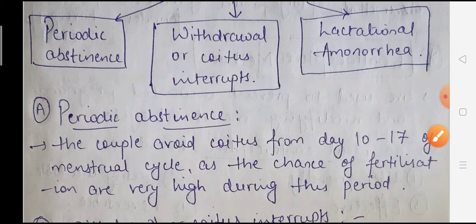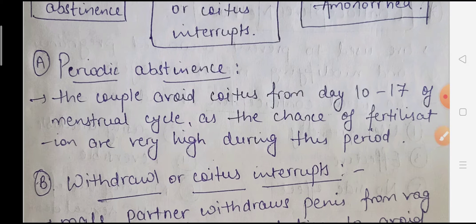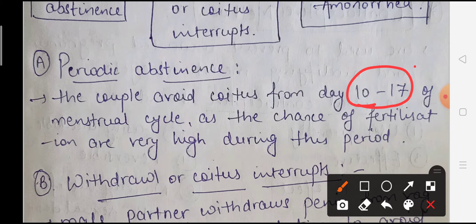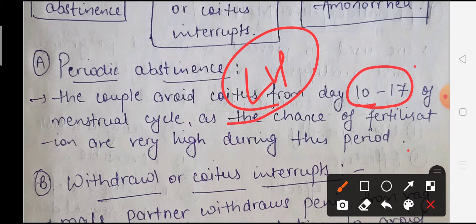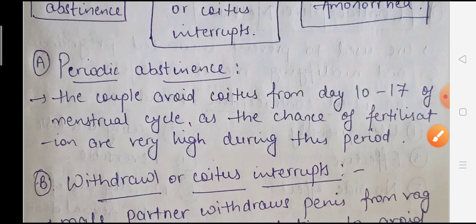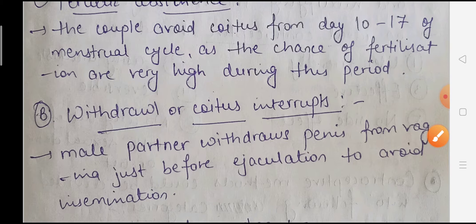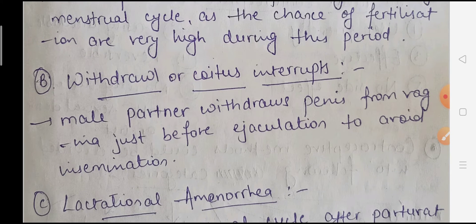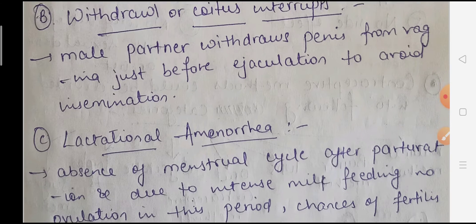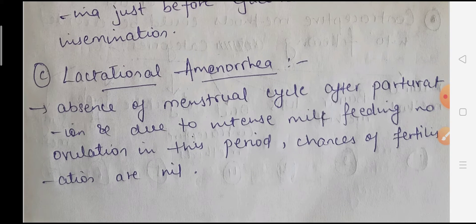In periodic abstinence, the couple avoids coitus from day 10 to 17 of the menstrual cycle, as the chances of fertilization are very high during this period. In the withdrawal method or coitus interruptus, the male partner withdraws the penis from the vagina just before ejaculation to avoid insemination. The third method is lactational amenorrhea — the absence of the menstrual cycle after parturition due to intense milk feeding means there is no ovulation, so chances of fertilization are nil.